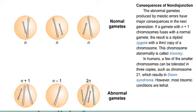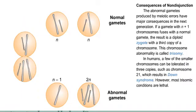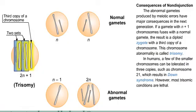The abnormal gametes produced by meiotic errors have major consequences in the next generation. If a gamete with N plus 1 chromosomes fuses with a normal gamete, the result is a diploid zygote with a third copy of a chromosome. This chromosome abnormality is called trisomy. In humans, a few of the smaller chromosomes can be tolerated in three copies, such as chromosome 21, which results in Down syndrome. However, most trisomic conditions are lethal.